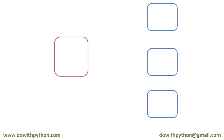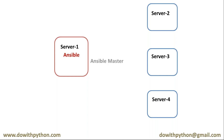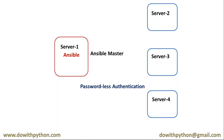So assume you need only three servers for your application. To manage all these three servers from one central point, I am taking one extra server. On server one I will install Ansible, and servers two, three, and four I am going to manage from server one. So server one is the Ansible master or controller, and I will provide password-less authentication from server one to two, three, and four. The remaining servers — two, three, four — are called nodes.